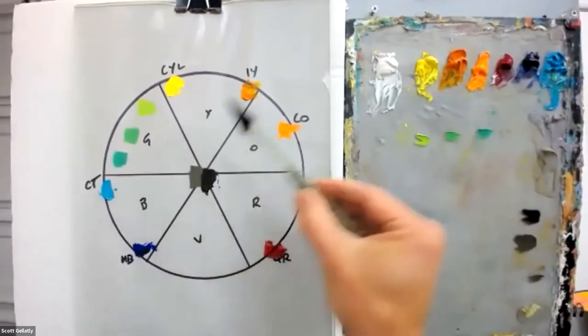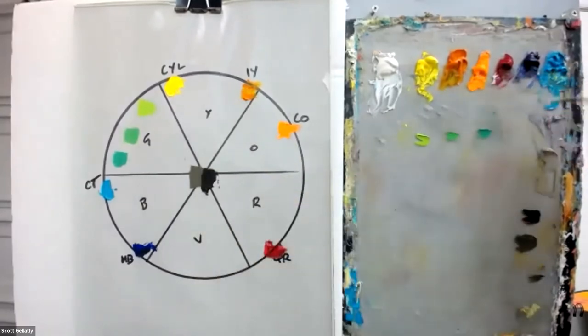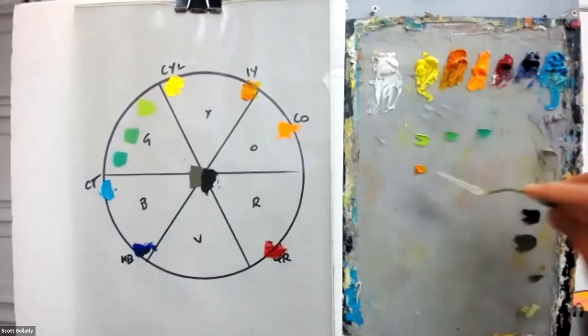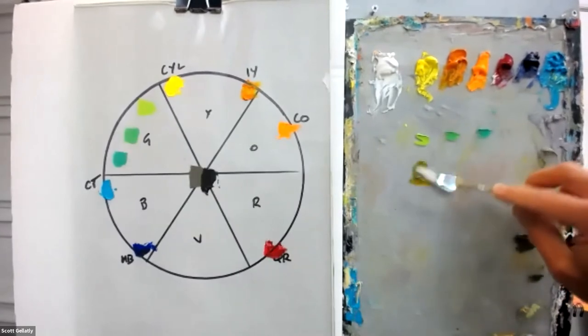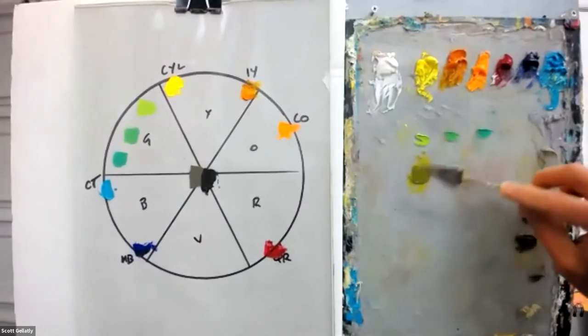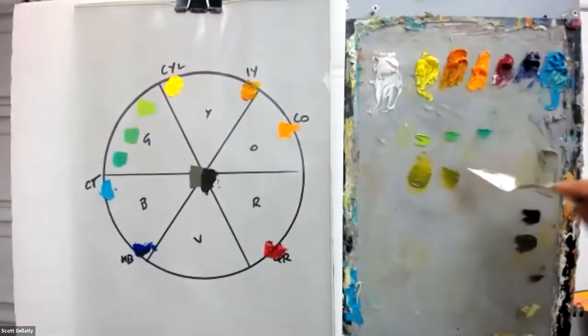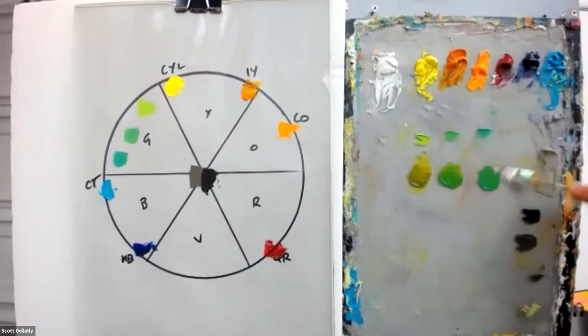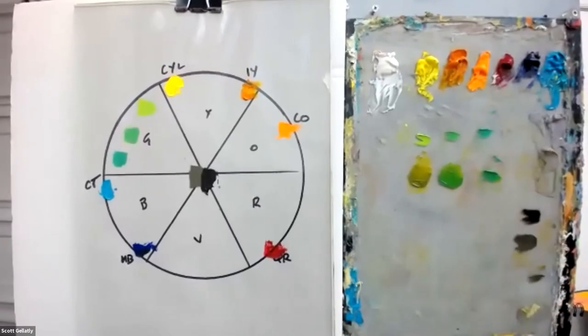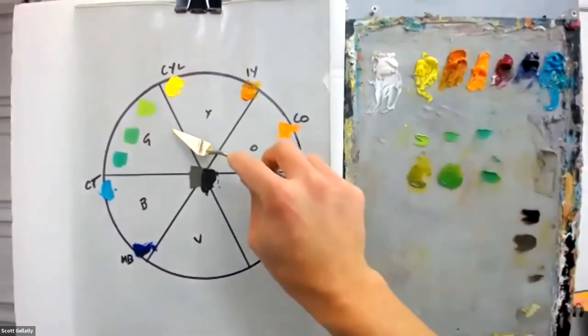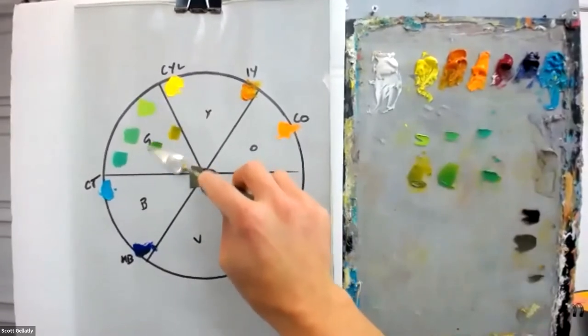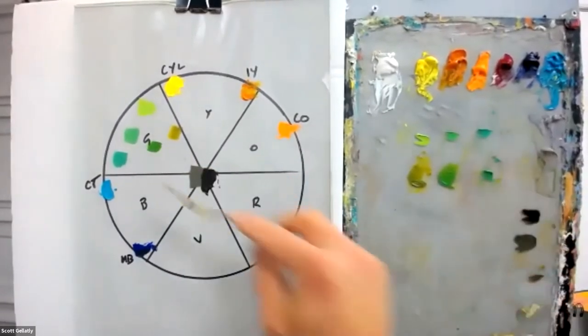And then as the colors start to move away from each other, like the cobalt teal and Indian yellow, we start to lower our chroma of the greens that we can mix.